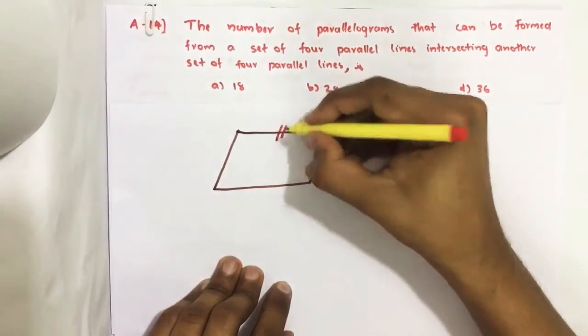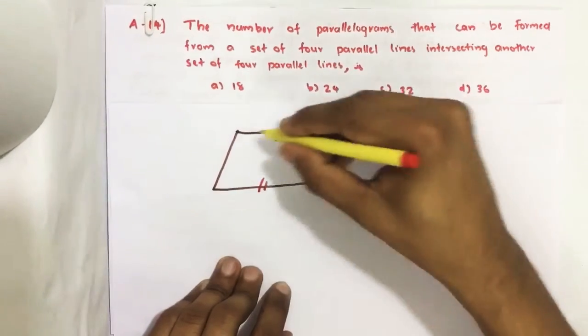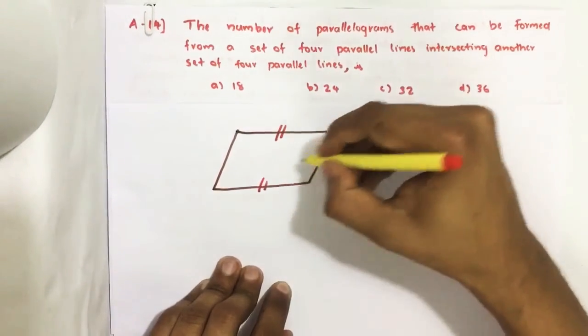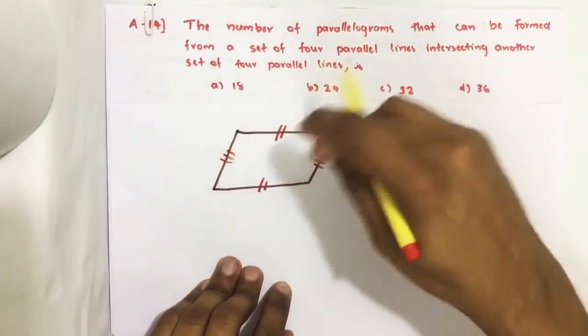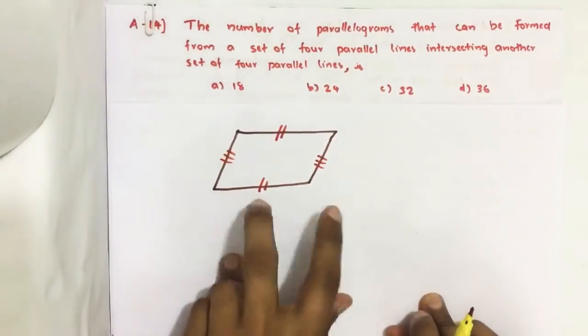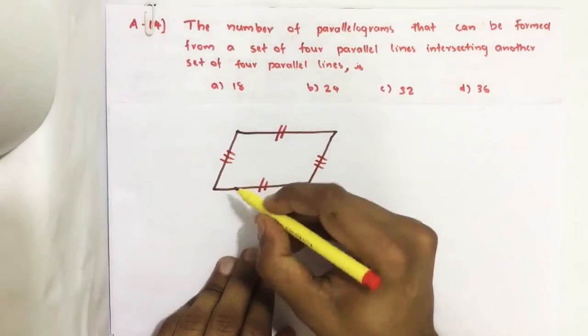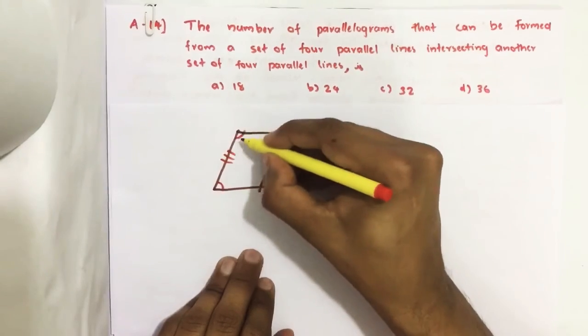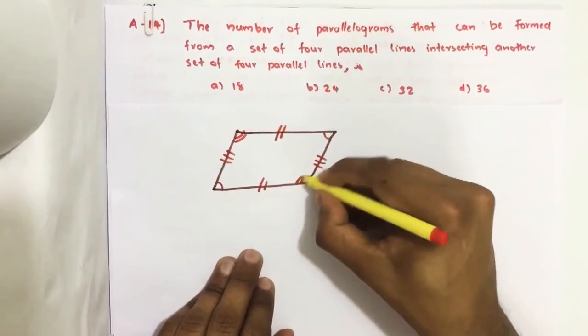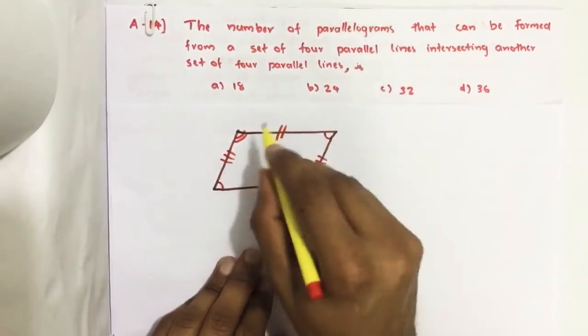In this, these sides are parallel and these sides are also parallel to each other. And its opposite angles are equal. This angle is equal to this angle. This is a parallelogram.